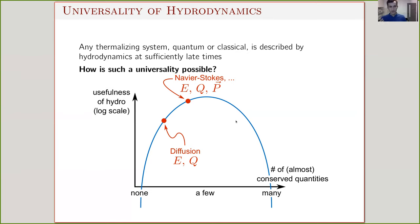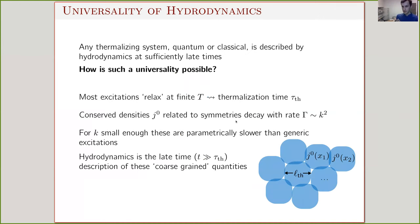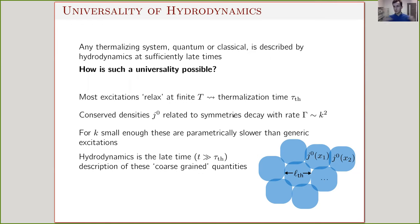The description you get, up to a few coefficients that might depend on the theory, is extremely universal. The first question that comes to mind is how such universality is possible. We don't really have a proof of the emergence of hydrodynamics in many interacting systems, but we definitely think it's true. The intuitive explanation is that at finite temperatures, most excitations relax with some timescale — the thermalization or equilibration time.